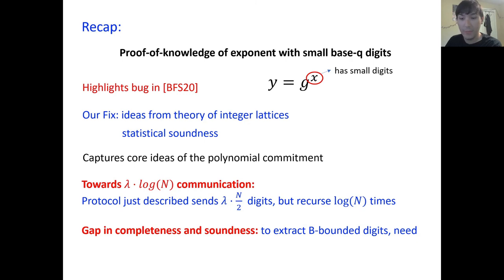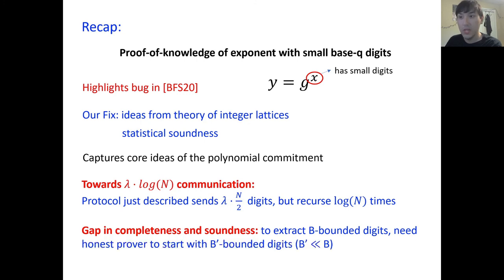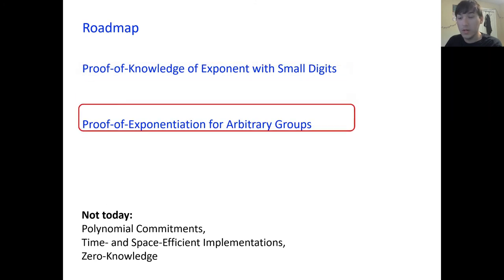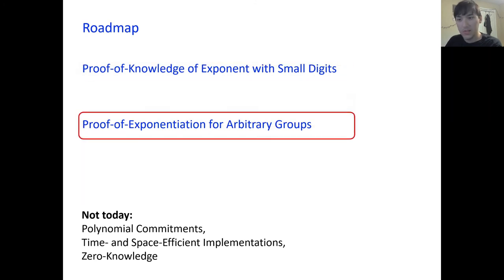Finally, I want to mention there's a gap between completeness and soundness: if we want to extract B-bounded digits in the extraction, then we need an honest prover to start with some B-prime bounded digits, which is much smaller than B. With the proof of knowledge of exponent with small digits complete, we're going to move on to our next contribution: the proof of exponentiation for arbitrary groups.